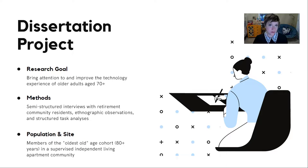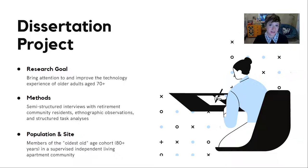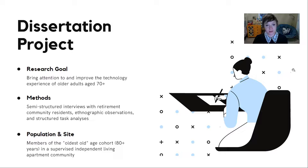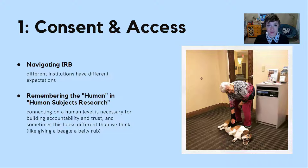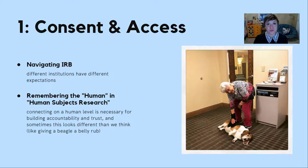I knew coming into graduate school that I wanted my dissertation project to look at the technological user experiences of folks over the age of 70 — older adults. This population was important to me, and I saw it as one that was typically ignored by technology research and design. To do this, I used methods like interviews, ethnographic observations, and task analyses to gather rich qualitative and quantitative data from residents of a retirement community in central Florida, folks who are typically over the age of 80. In adopting these methods, I used feminist tactics to make sure that I was interacting justly with participants, maximizing benefit and minimizing harm, and truly listening to them.